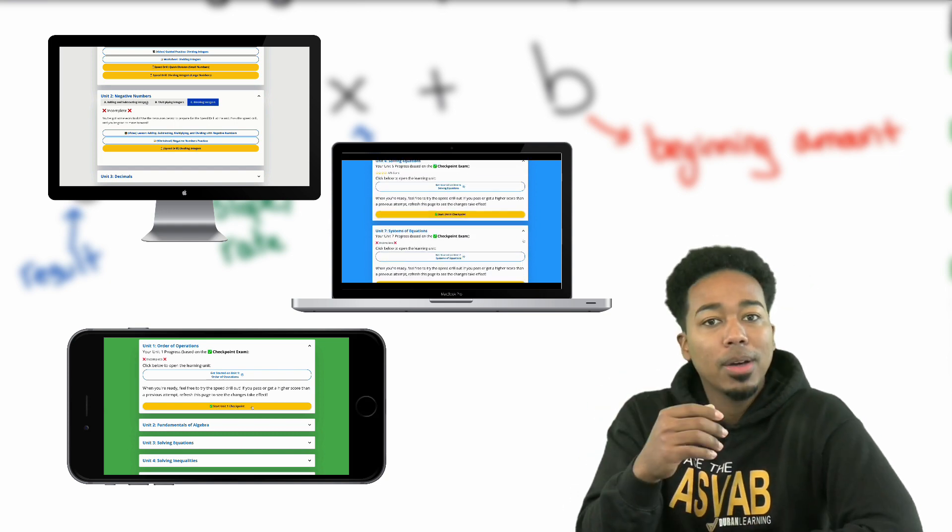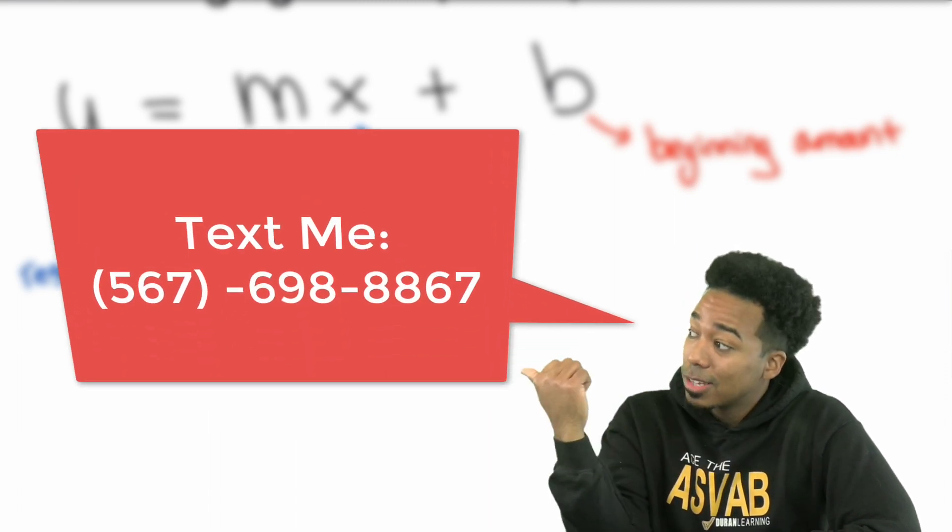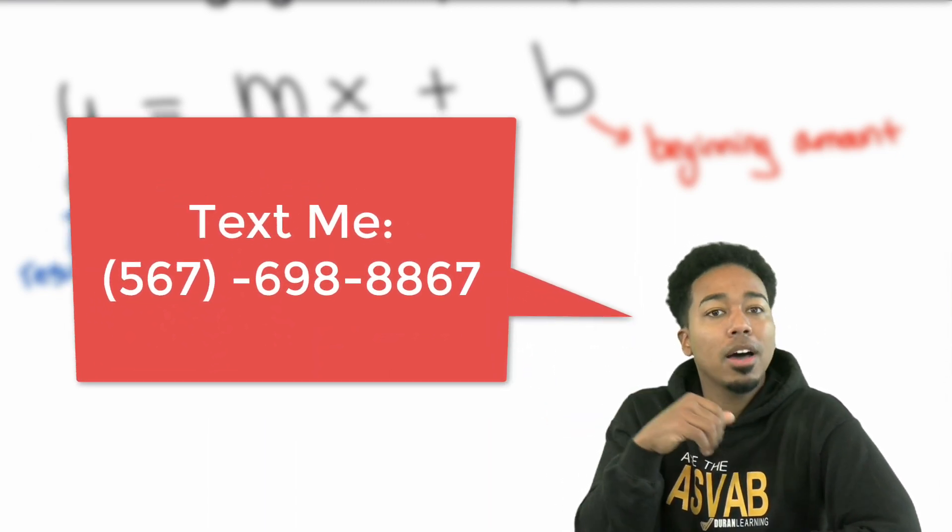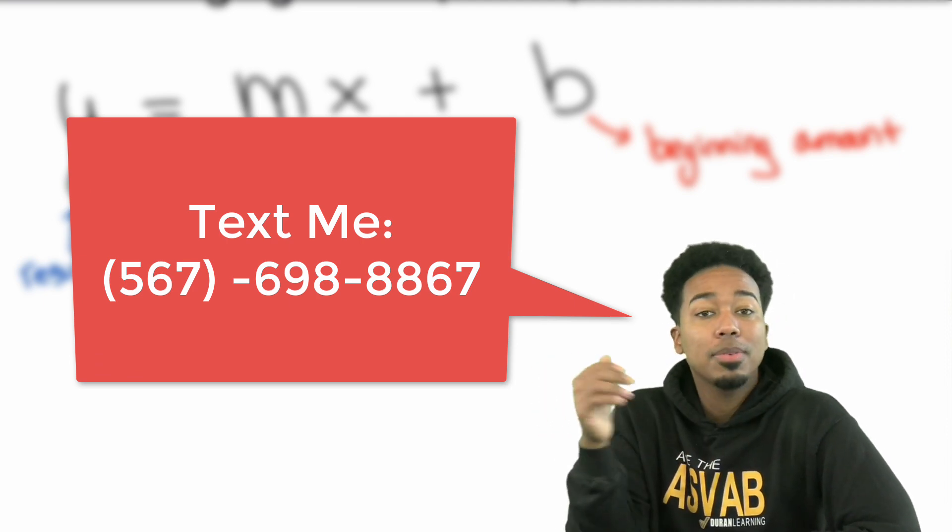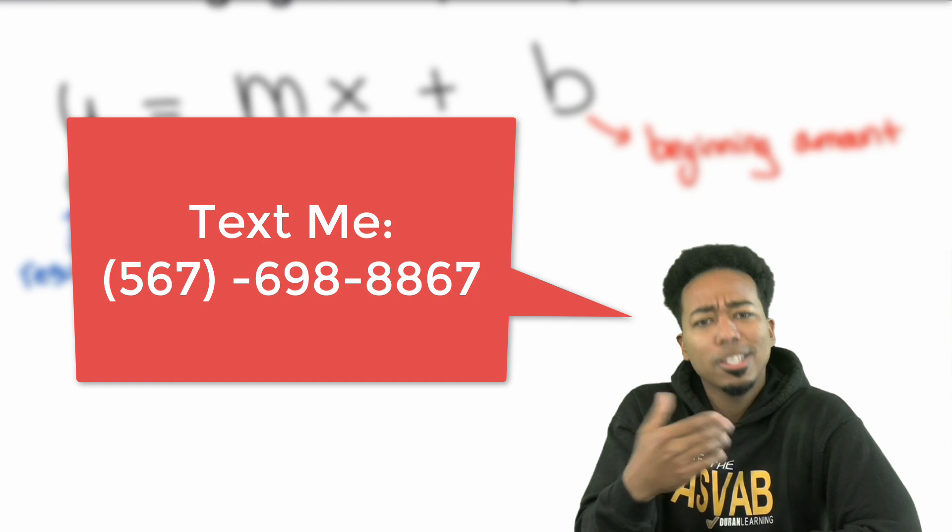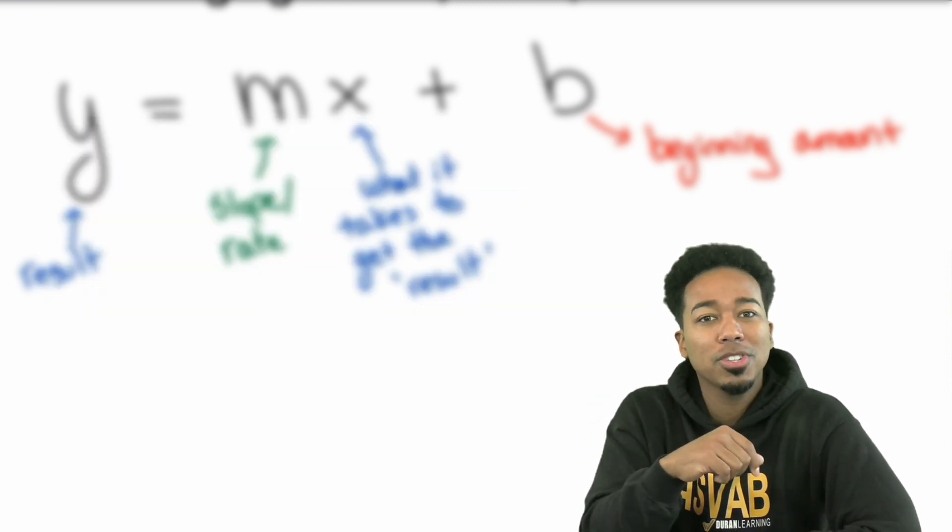So if you're happy about that or excited, go ahead and click the link in the description of this video, or text me at 567-698-8867, text me asking me about how the program works. I'm more than happy to take time out of my day to make sure that you're successful. So don't waste time. Let's make sure you get the score you want in that job you deserve. Hit me up, click the link in the description, and let's get you in there.